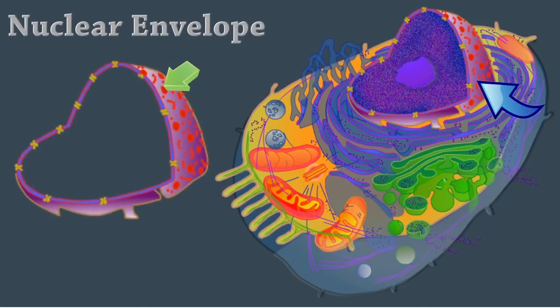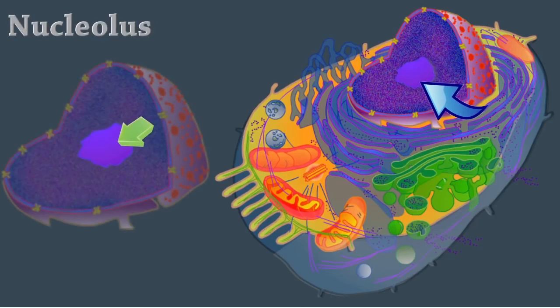The nuclear envelope is a double membrane structure that is pierced by pores. The outer membrane is continuous with the endoplasmic reticulum. The nucleolus is a small, dense body within the nucleus. It's composed of ribosomal RNA and proteins, and it's the site of ribosome subunit manufacture. Nucleoli also assemble signal recognition particles and play a role in the cell's response to stress.